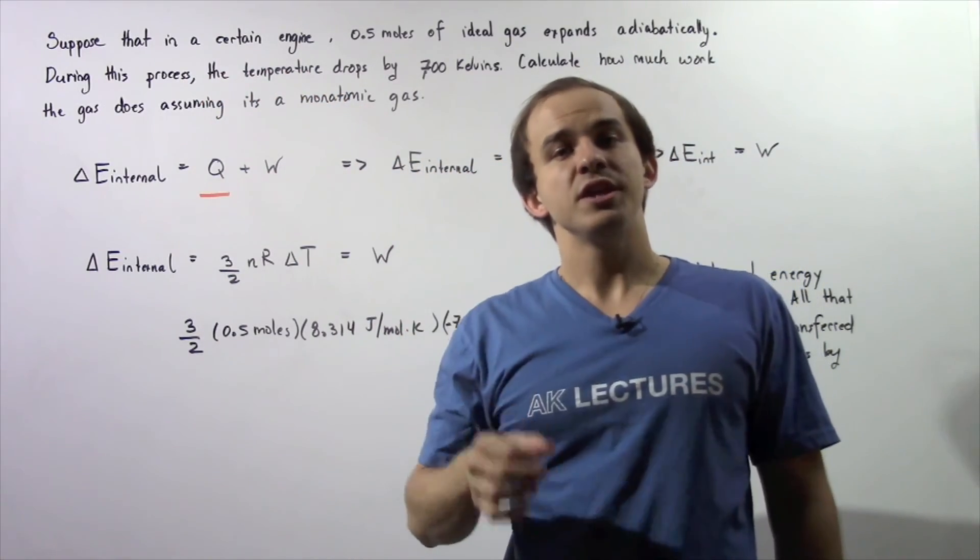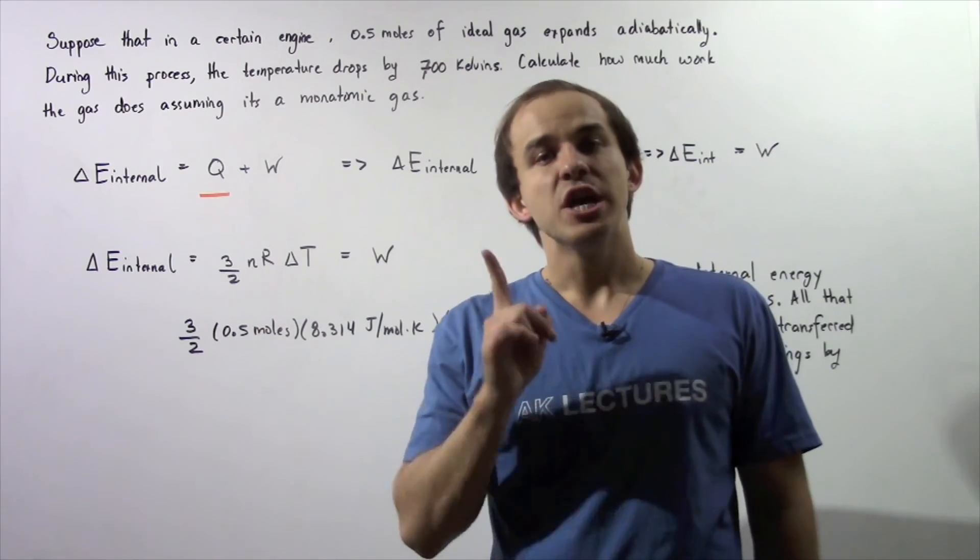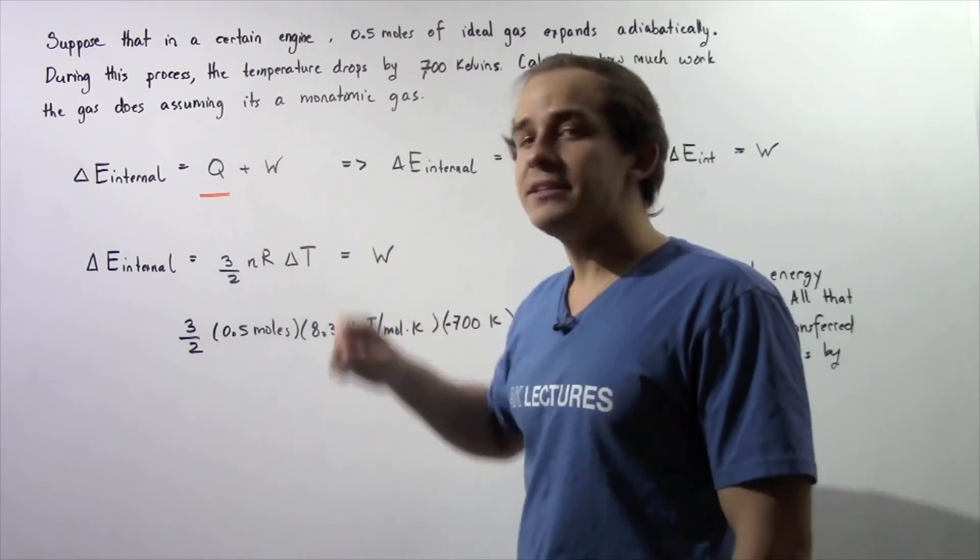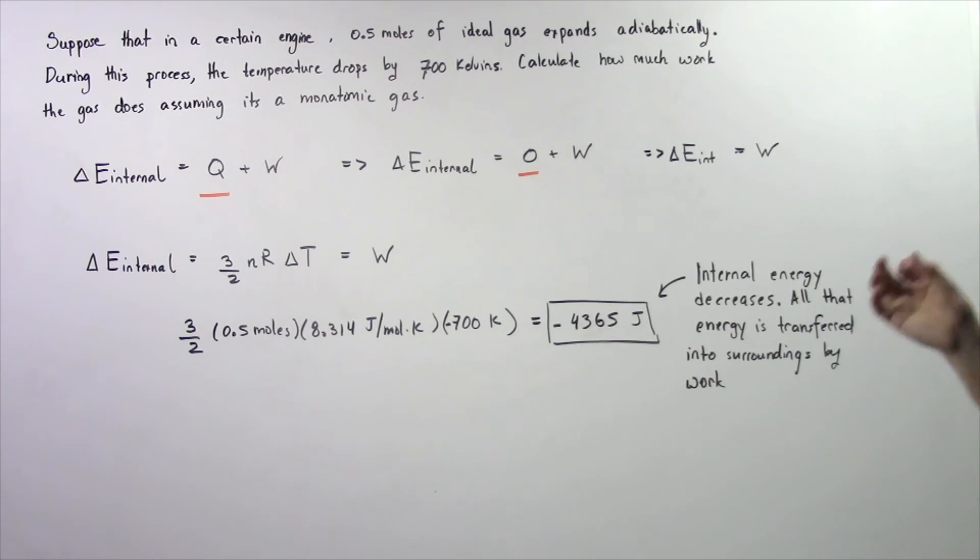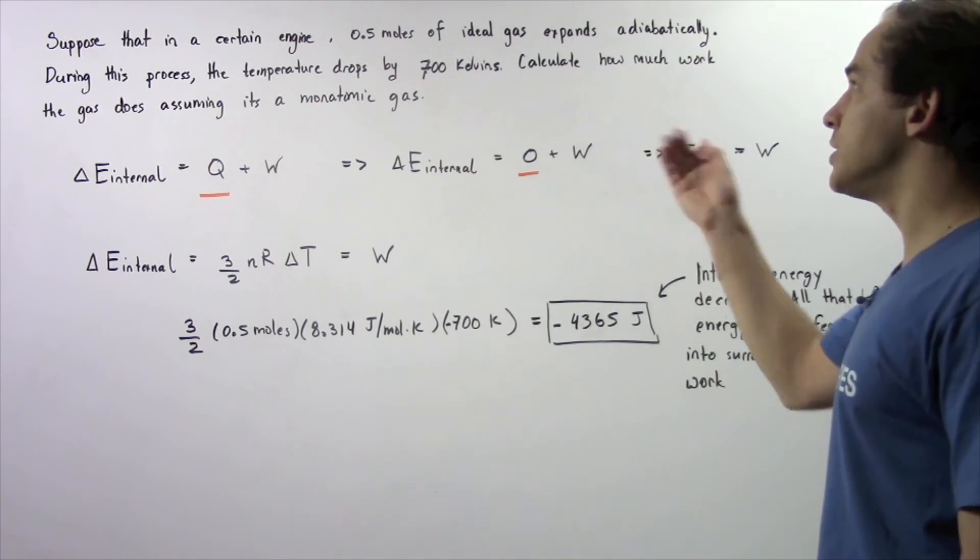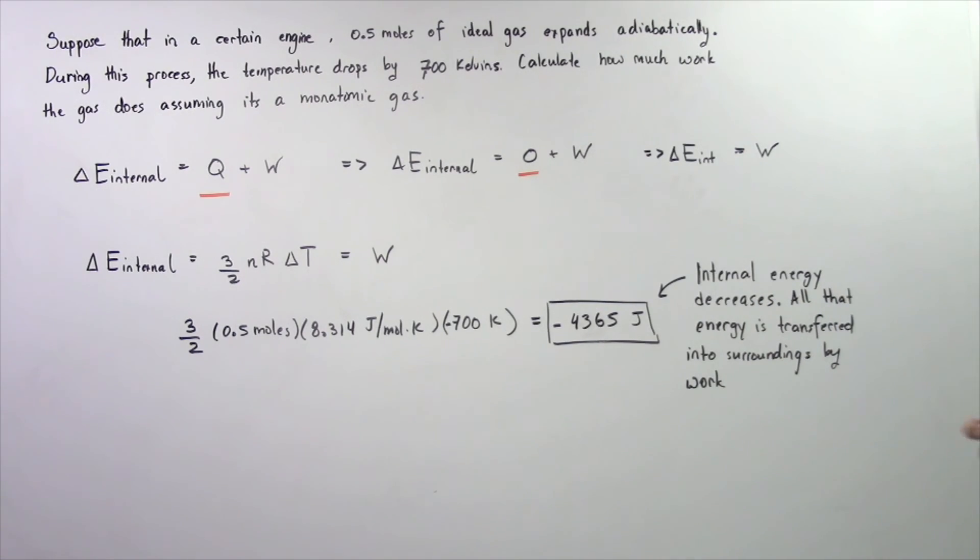Now, because we're dealing with an adiabatic process, that implies that Q is 0. So, we see that the change in internal energy of our ideal gaseous system during our expansion is equal to the work.